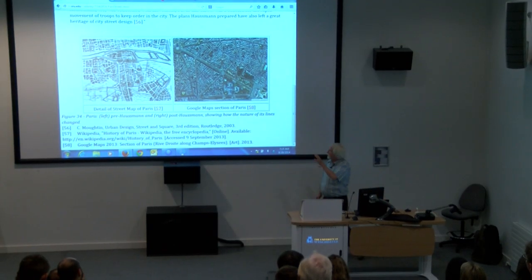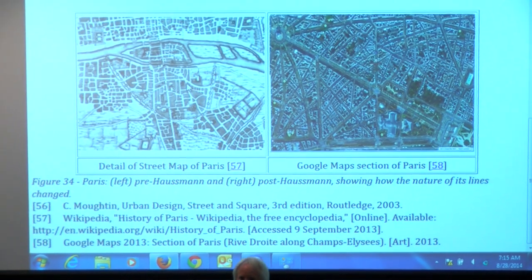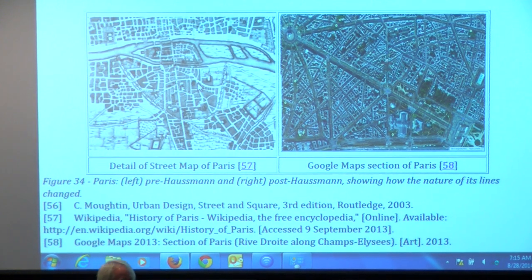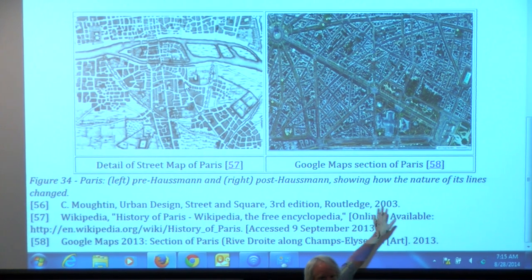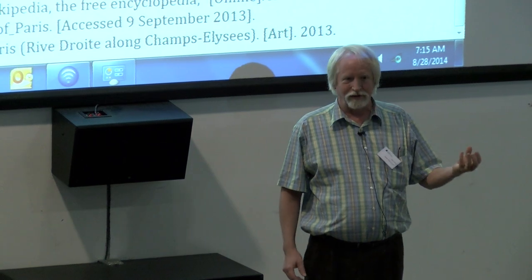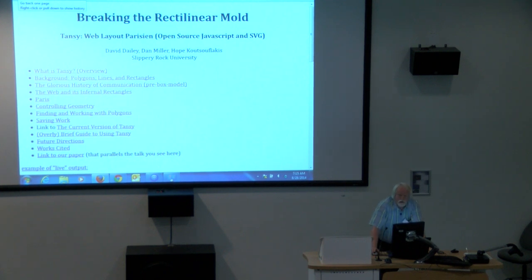Medieval Paris looks like a Voronoi diagram; modern Paris looks like a bunch of lines intersecting at interesting angles, with semantics flowed into it — human lives, buildings, gardens, palaces. So I was thinking: how can we design a tool that allows people to create web pages that would not flow into rectangles and would not suffer from the limitations of the box model?